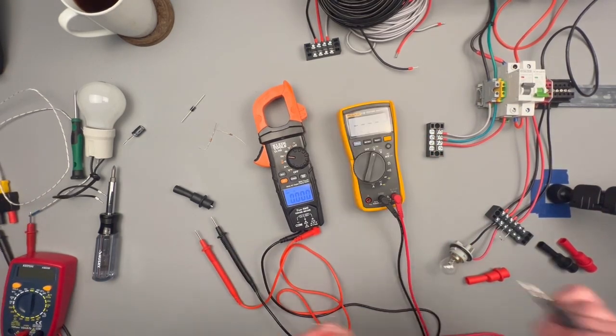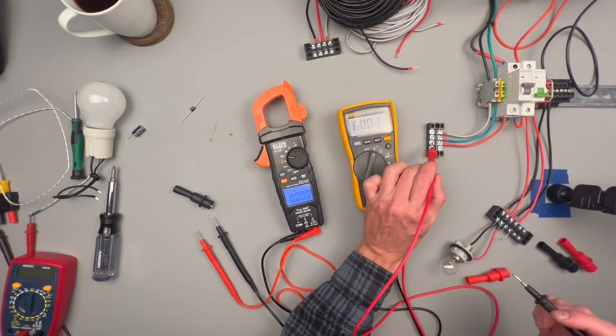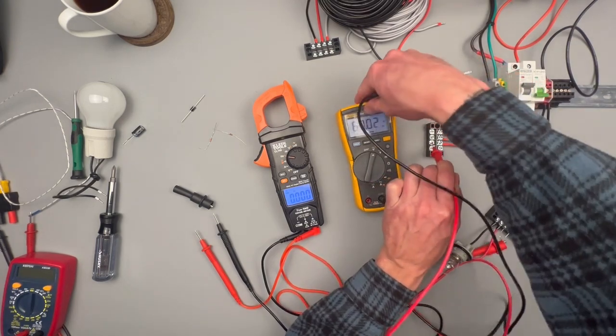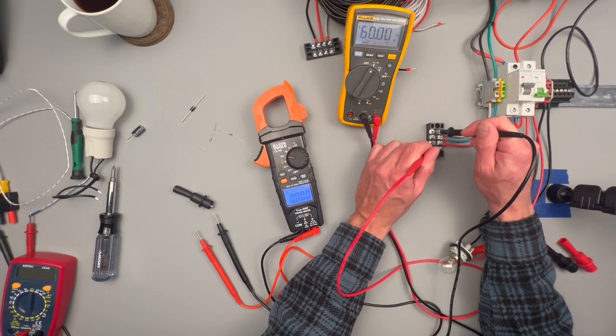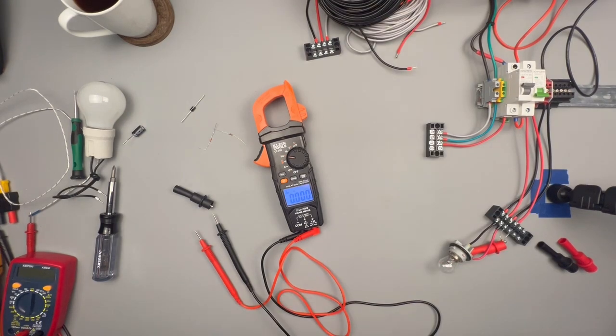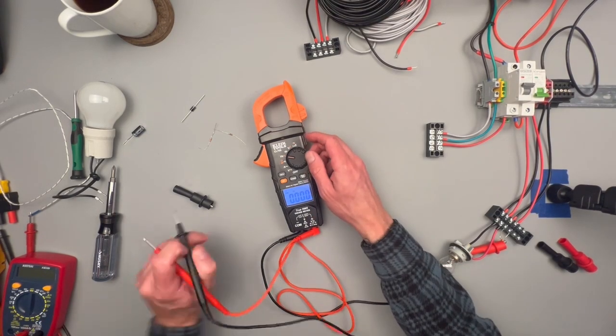As opposed to if I take this Fluke, I put it on a Hertz setting. I do a single probe. I come back with 60 Hertz. I use both probes. I still come back with 60 Hertz. So that's something to look out for on this meter. It doesn't have a way to compensate for that.